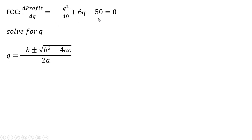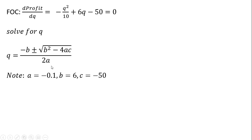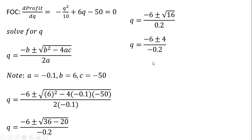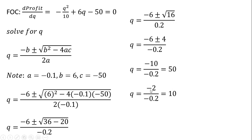Here is our quadratic formula. We note that A in this case is minus 1 divided by 10, or minus 0.1; B is 6; and C is going to represent minus 50. Making our substitutions and simplifying, we get: minus 6 minus 4 is minus 10, divided by minus 0.2, which is 50. And then minus 6 plus 4 is minus 2, divided by minus 0.2, which is 10.